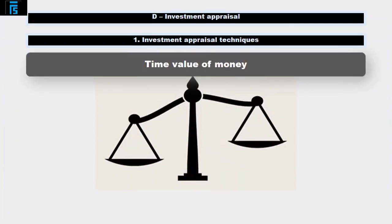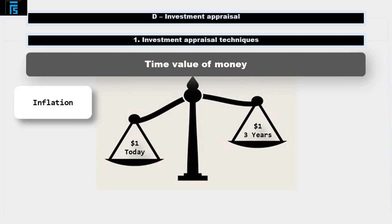One dollar today is worth more than one dollar in three years time. There are three reasons for this. Firstly, inflation. You can buy more with a dollar today than you could with a dollar in three years time, as prices tend to increase periodically.